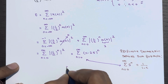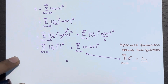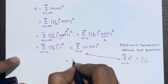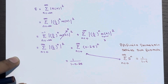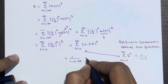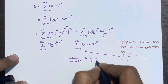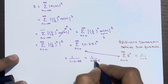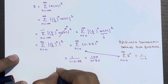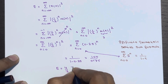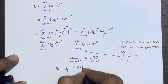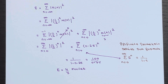Applying the formula, the summation becomes 1 divided by (1 − 0.25), which equals 1 divided by 0.75, giving us 4/3. So we got the energy E = 4/3 joules. The energy has been calculated successfully.